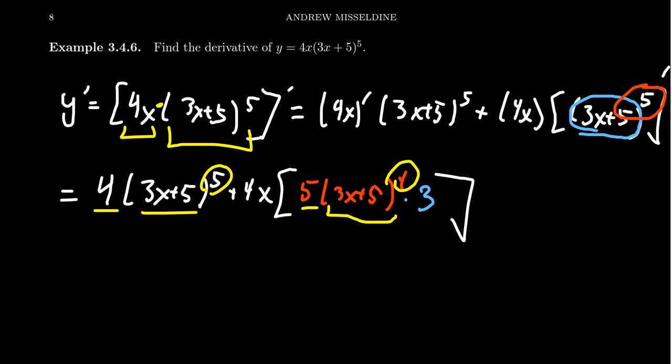Since one is the fifth power and one is the fourth power, you can't take away more than what the least product has, which is the fourth power. So we're going to factor out a 4. We're going to factor out 3x plus 5 to the fourth power.